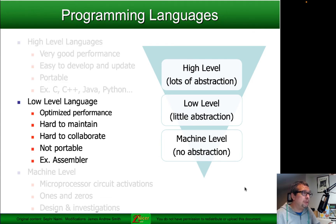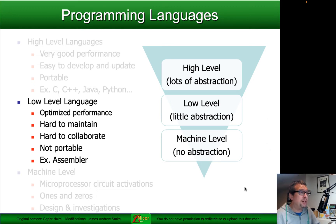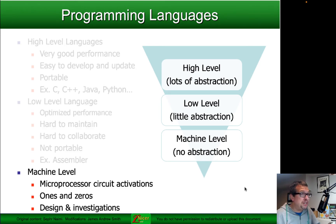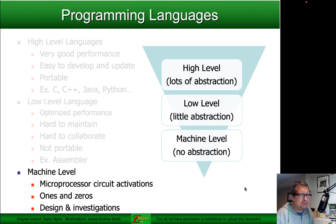There are also low-level programming languages like Assembler that are optimized for performance. They are hard to maintain, hard to collaborate with, not really portable, but they do have their place. And then we also have machine-level illustrations of programming, where basically we're talking about the activation of circuits within microprocessors — the individual ones and zeros that make certain circuits turn on and off. They're used when we're doing design of microprocessors, investigations for performance or hacking, things along those lines.